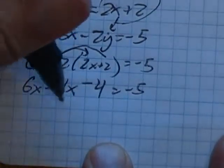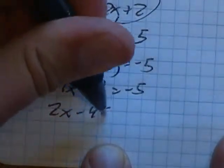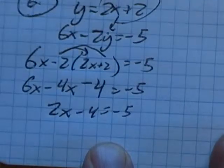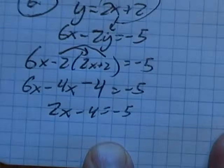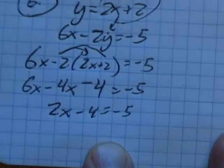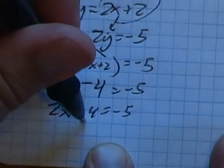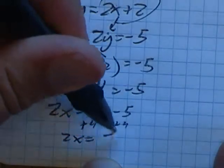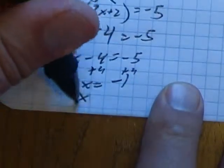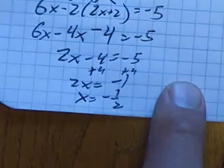Keep going from here. 6x minus 4x is 2x. Now add 4 to both sides. 2x equals negative 1, divide by 2. x is negative one half.